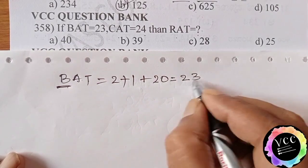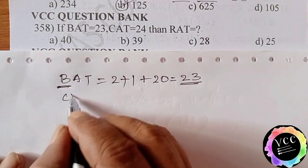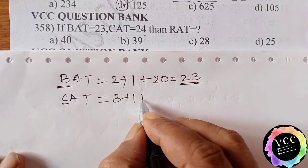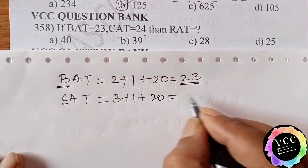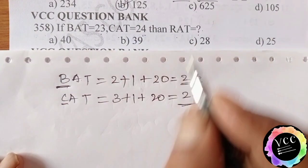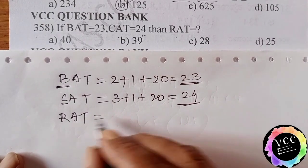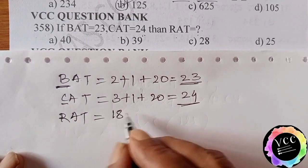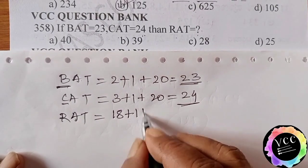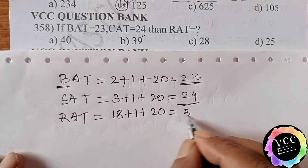Here same fashion, CAT. C, its order is 3. A order is 1. T order is 20. Its sum is 24. So that's why CAT means 24. Then in the same way, RAT equal to R, its alphabetic order will be 18 and A, its alphabetic order is 1 and T, alphabetic order is 20. Its sum is 39.